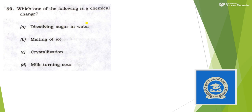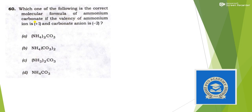Next: which one of the following is a chemical change? Remember: a change which cannot be reversed is a chemical change. Dissolving sugar in water can be reversed — physical change. Melting of ice can be reversed — physical change. Crystallization can also be reversed — physical change. But milk turning sour cannot be reversed, so that is a chemical change. Answer is option D.